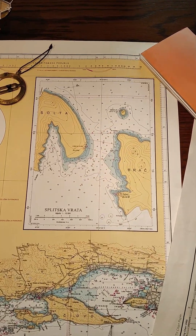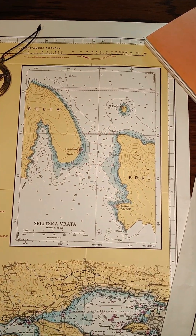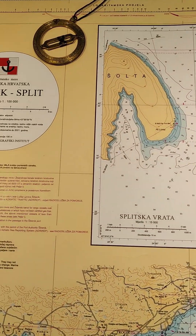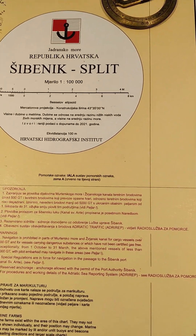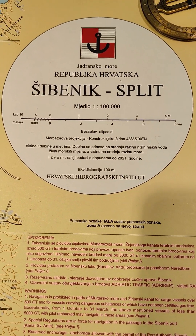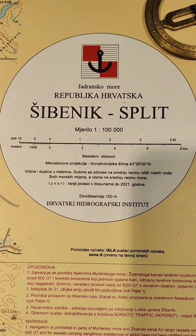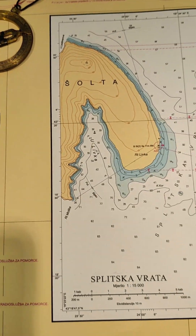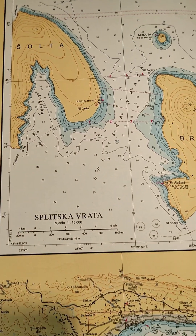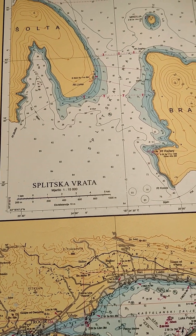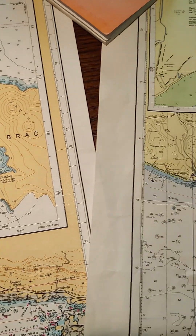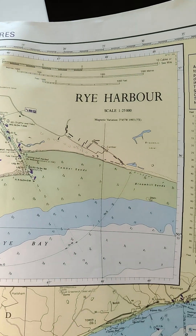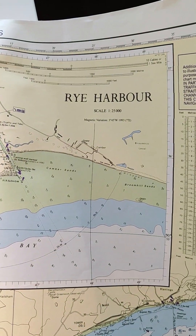Nautical Charts, essential for safe navigation, come in several types. Coastal Charts guide near-shore travels, General Charts serve open ocean voyages, and Harbor Charts aid in docking.